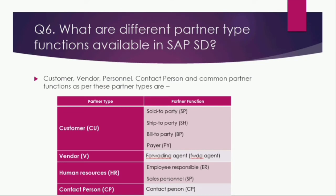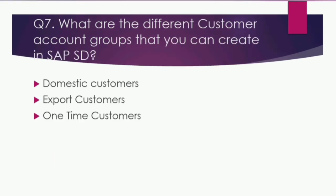The next question is: what are the different partner types and functions available in SD? The partner types are customer, vendor, personnel, and contact person. Common partner functions include: for customer — sold-to party, ship-to party, bill-to party, and payer; for vendor — forwarding agent; for human resources — employer responsible and salesperson; and for contact person — contact person.